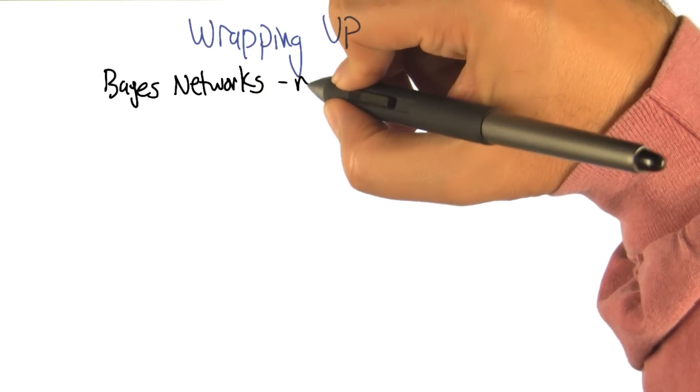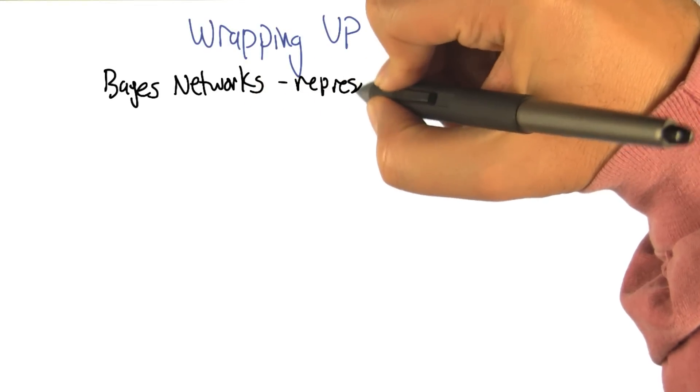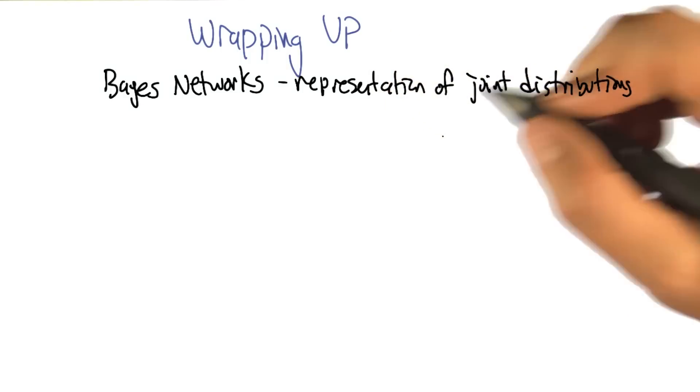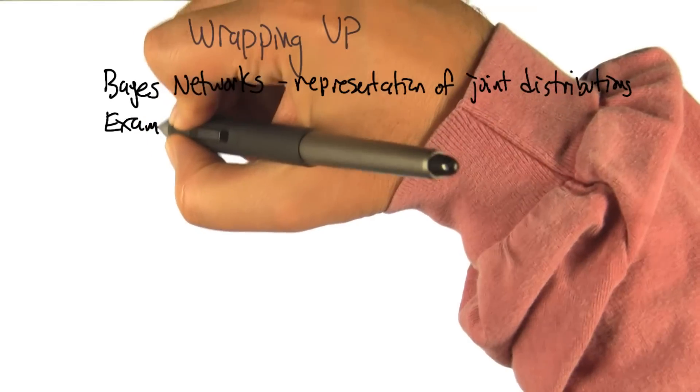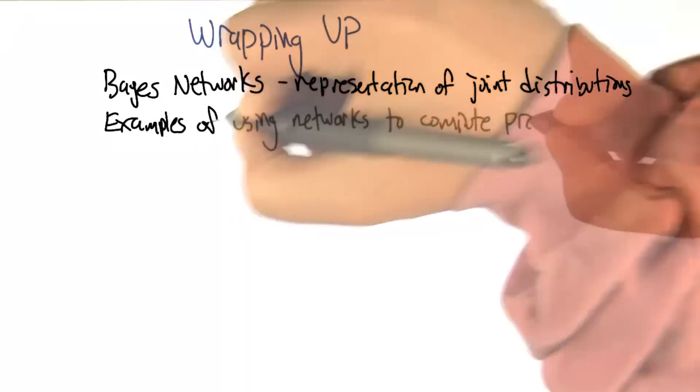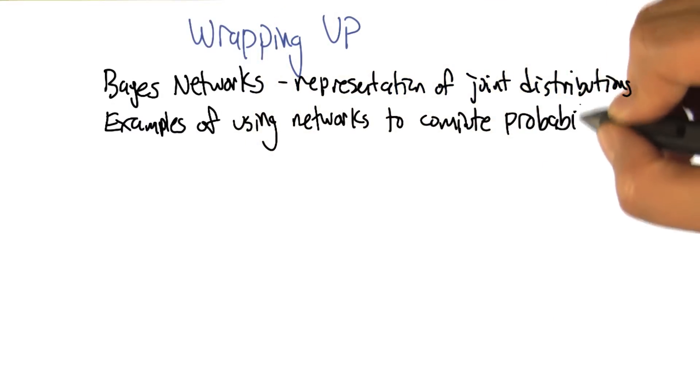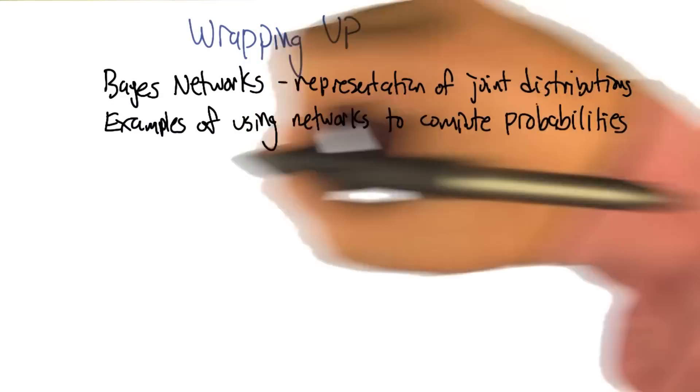We talked about the Bayesian network representation of joint probability distributions. Right. And we did a lot of examples of how to actually do inference with networks. You know, exactly how do we compute probabilities of particular values. We mentioned sampling.